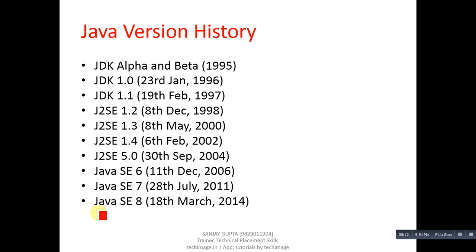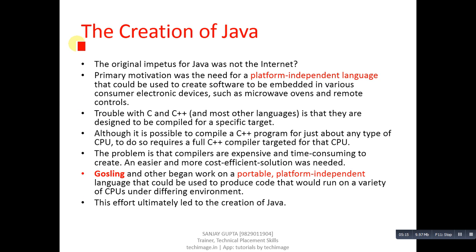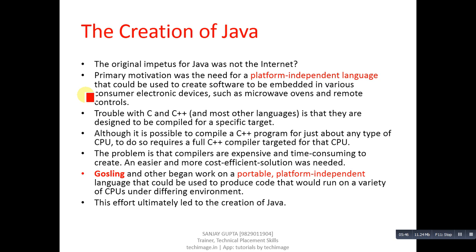Now the important topic is the creation of Java. The original purpose of creating Java was not the internet. The primary motivation was the need for a platform-independent language that could be used to create software to be embedded in various consumer electronic devices such as microwave ovens and remote controls. Platform independent means the code developed on a particular system can be executed on any other system — this nature is known as platform independence.